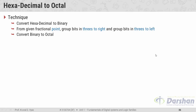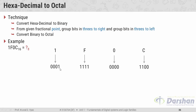Now let us take one example: 1F0C in hexadecimal. We will write 1F0C with some spacing. In the first step, we convert the hexadecimal number to binary using the hexadecimal to binary table: for 1 → 0001, for F → 1111, for 0 → 0000, and for C → 1100. Now we will make groups of three bits starting from the right.